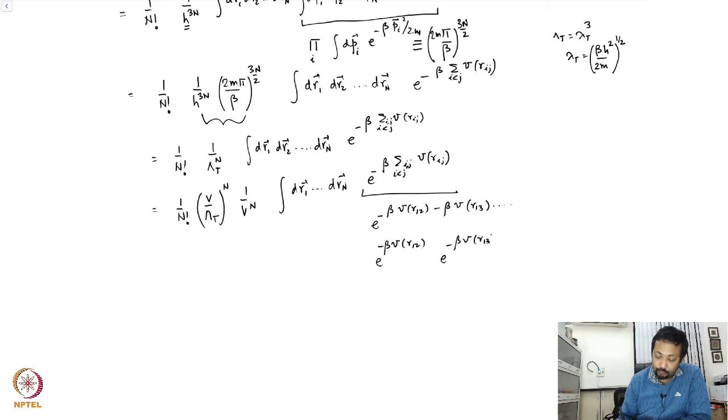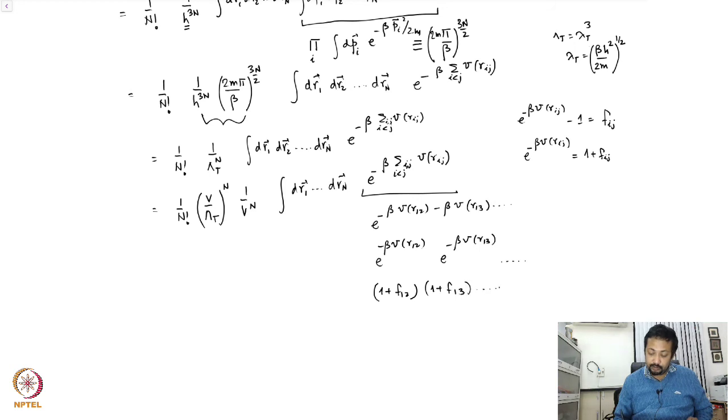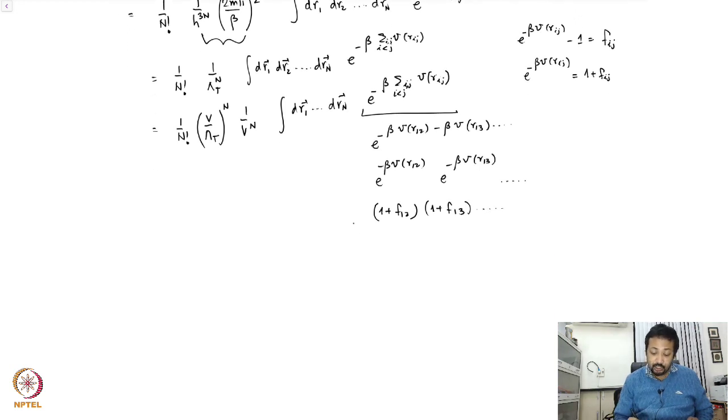We have defined the function e to the power minus beta V(r_ij) minus 1 is going to be f of ij. So clearly this means I can use this to rewrite e to the power minus beta V(r_ij) as 1 plus f of ij. So I have 1 plus f_12, 1 plus f_13, all possibilities.